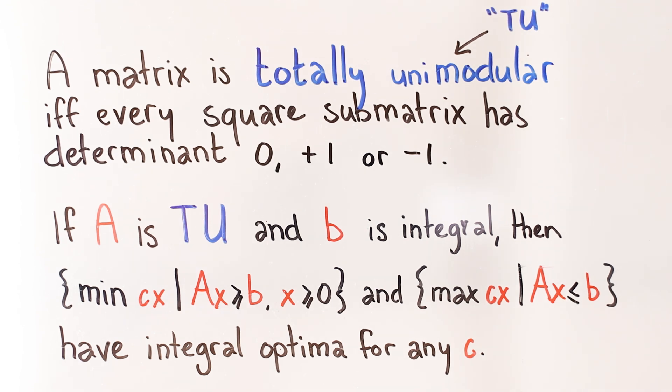Optimizing a linear objective function will then necessarily give an integral solution, as long as your solver is going to give you an extreme point solution. There's no need to get out the ILP solver if your matrix is totally unimodular.